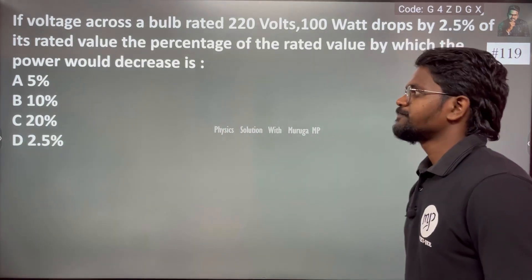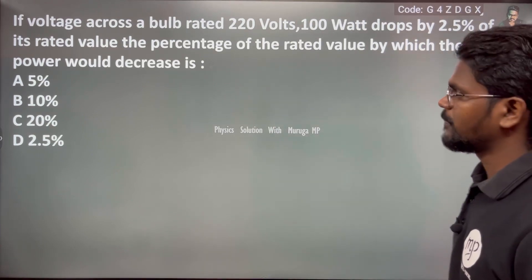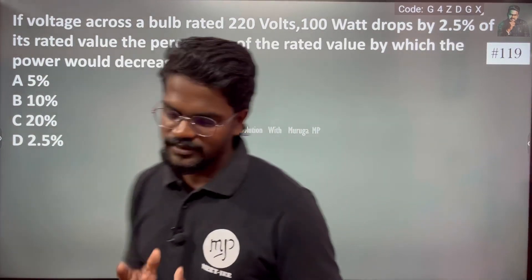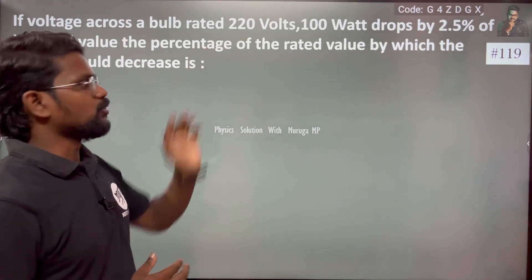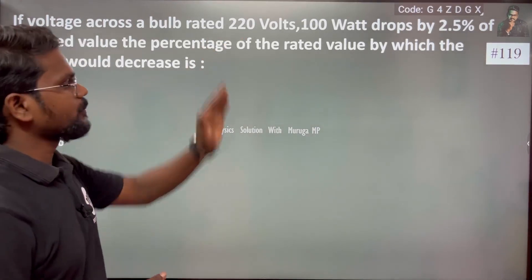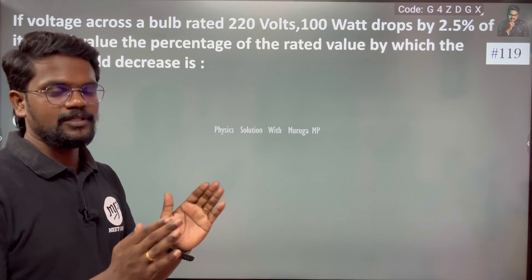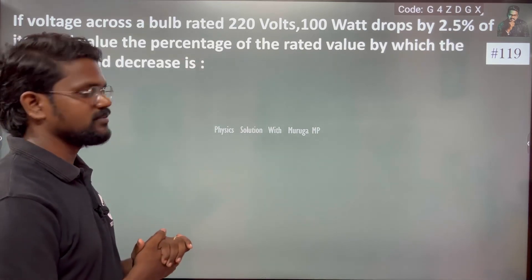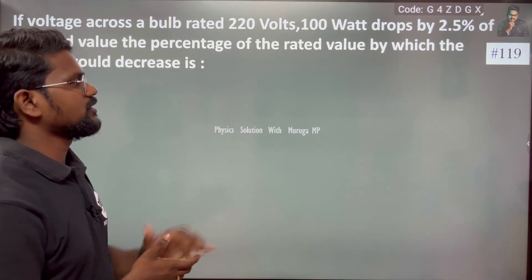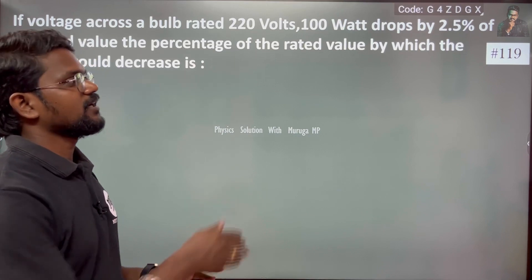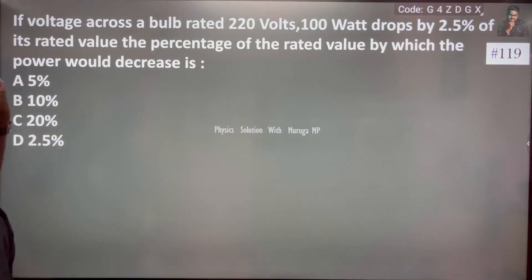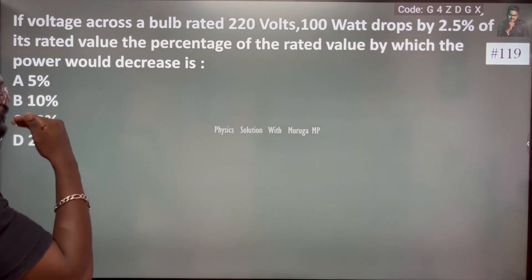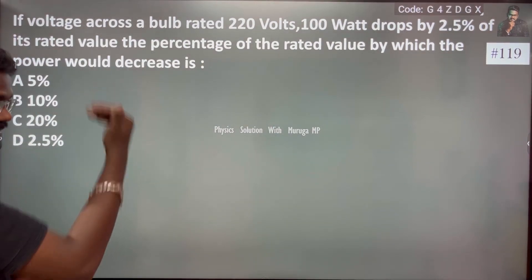If voltage across the bulb is rated as 220 volt, 100 watt. One bulb is 220 volt, 100 watt. Drops by 2.5% of its rated value. So 2.5% of its rated value is dropped.